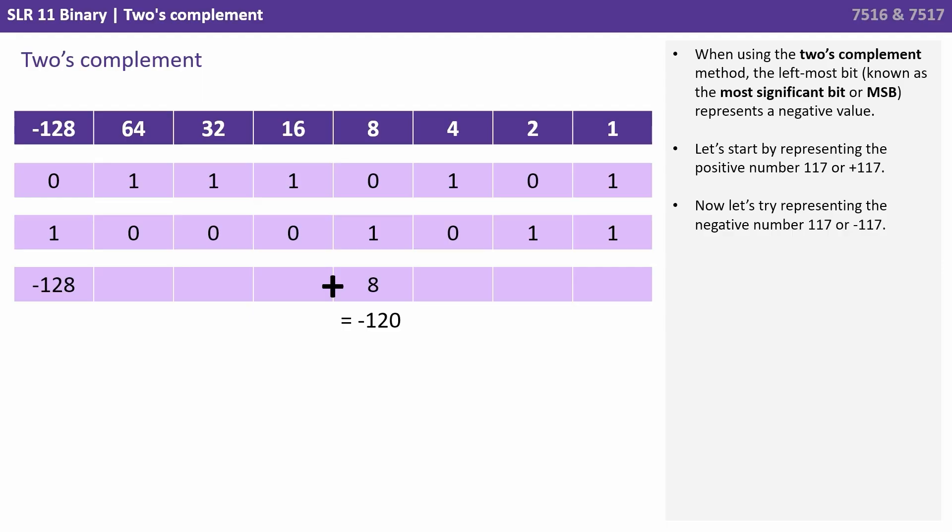We now put ones in any columns we need to bring the number up to negative 117. So we've put a one in the eight column. So we've gone from negative 128 to negative 120. We've put a one in the two column. Now we've gone up from negative 120 to negative 118. And finally we put a one in the one column. We've brought the number up from negative 118 to negative 117.